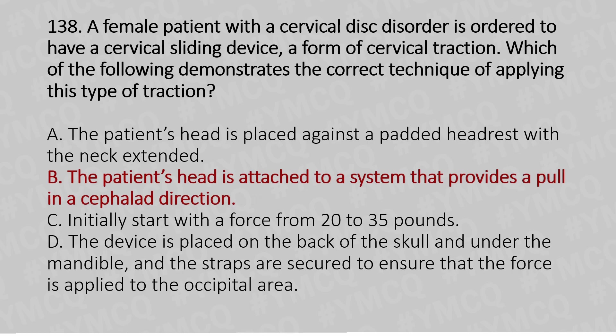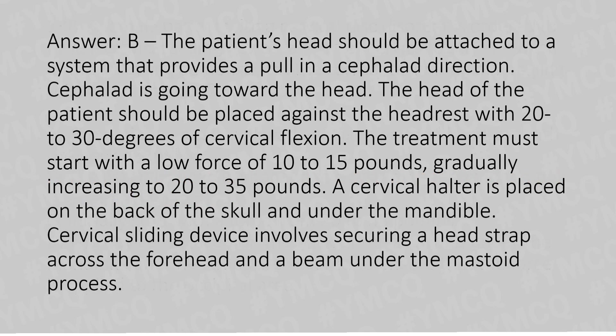The answer is Option B — the patient's head is attached to a system that provides a pull in the cephalic direction (towards the head). The head should be placed against a hard rest with 20 to 30 degrees of cervical flexion. Treatment must start with a low force of 10 to 15 pounds, gradually increasing to 20 to 30 pounds. A cervical halter is placed on the back of the skull and under the mandible; the cervical sliding device involves securing a head strap across the forehead and a bar under the mastoid process.